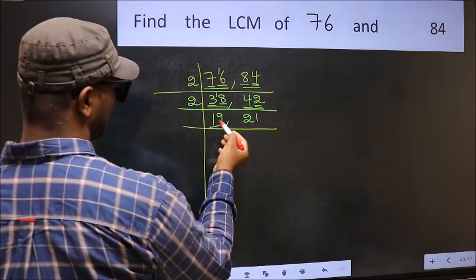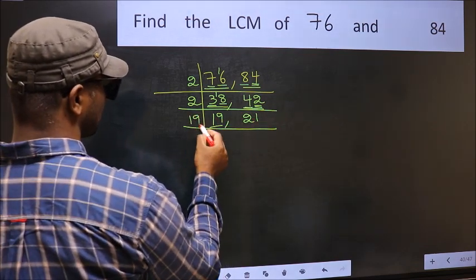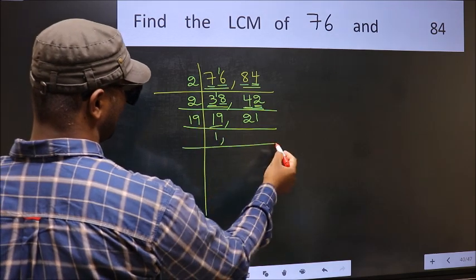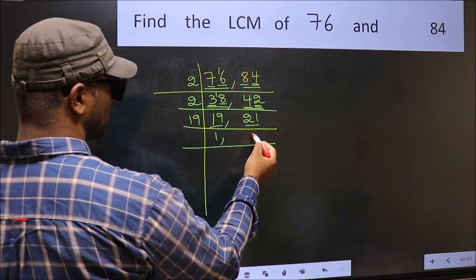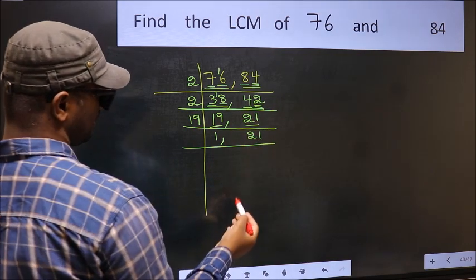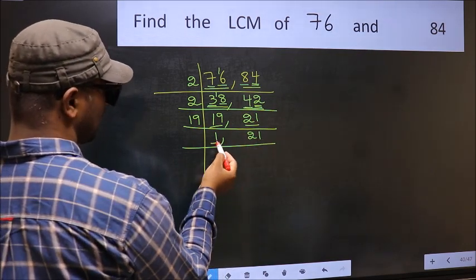Now here we have 19. 19 is a prime number. So 19 times 1 is 19. The other number 21 not divisible by 19. So you write it down as it is.